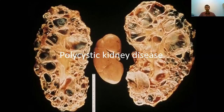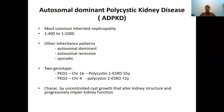Out of the cystic renal diseases, polycystic kidney disease is the main disease entity you need to be aware of. There are many other conditions where cysts develop in the kidneys, but for your purposes, for final MBBS, you need to know mainly polycystic kidney disease. It's an inherited nephropathy, and the predominant one is autosomal dominant polycystic kidney disease. Apart from that, you have autosomal recessive and sometimes sporadic polycystic kidney diseases as well.